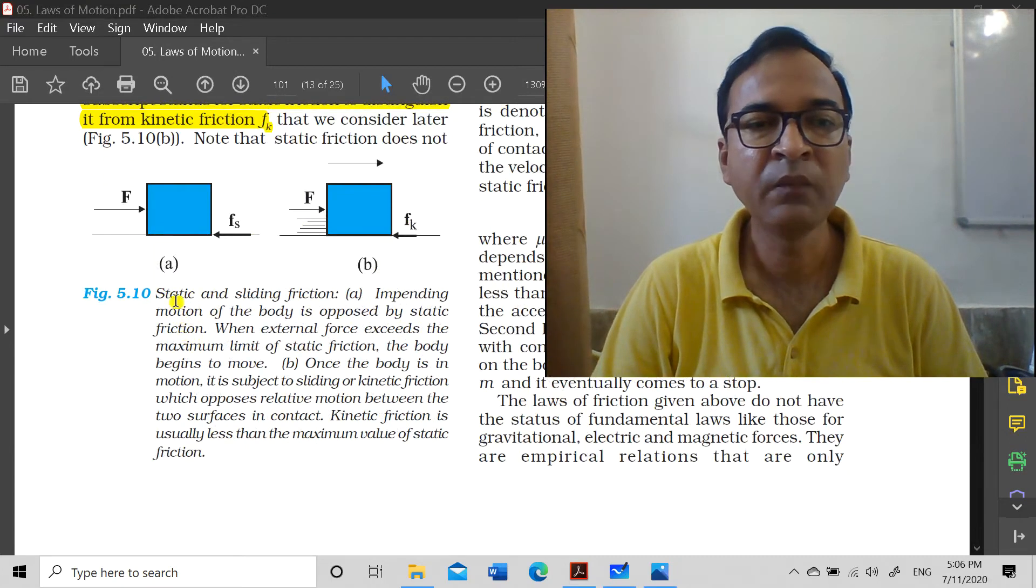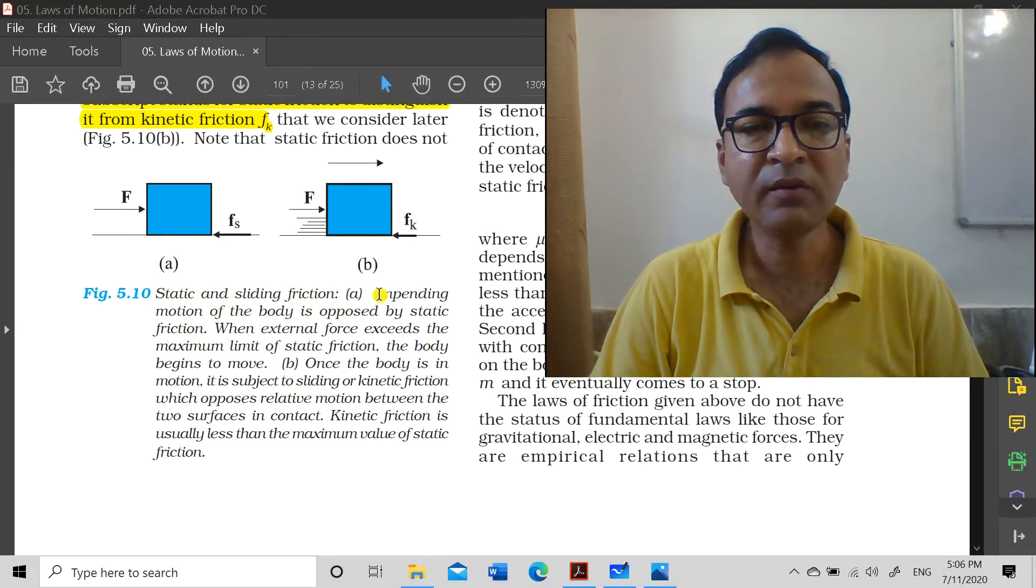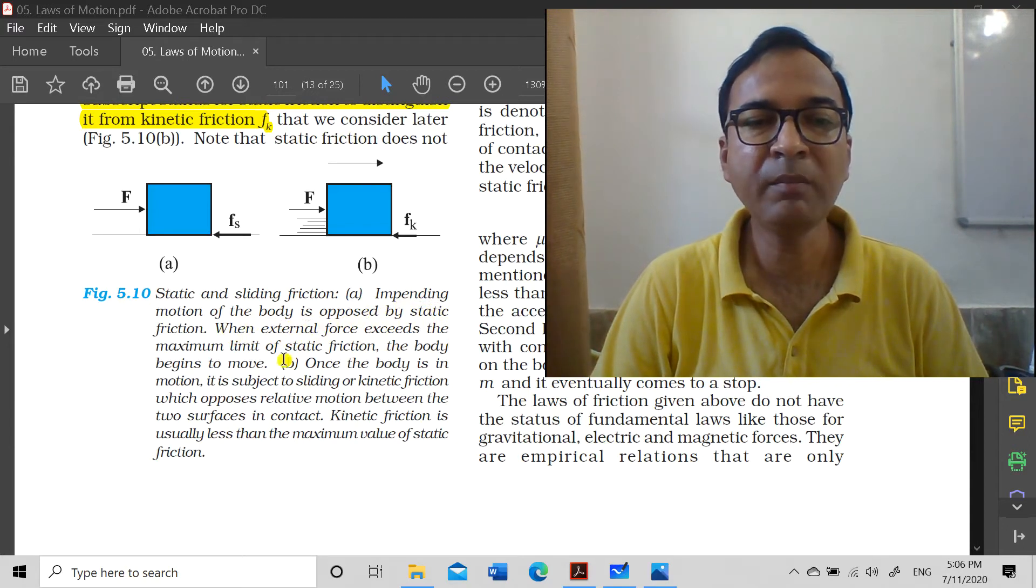The diagram shows static and sliding friction. Impending motion of the body is opposed by static friction. When external force exceeds the maximum limit of static friction, the body begins to move. Once the body is in motion, it is subjected to sliding or kinetic friction, which opposes relative motion between the two surfaces in contact.